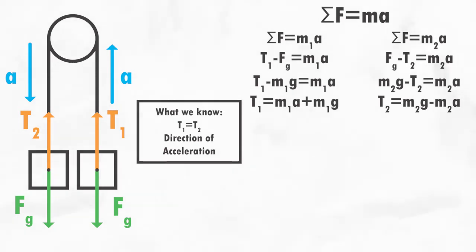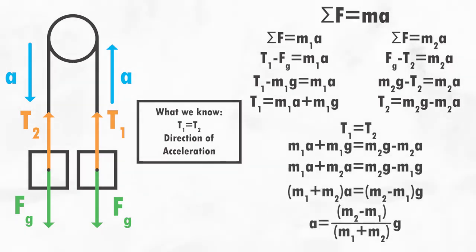Now, we can set the equations equal and solve for the acceleration. With our equation solved, we see that the acceleration of the system of masses is equal to the gravitational acceleration multiplied by the ratio of the difference in mass over the total mass.